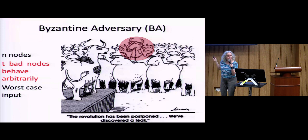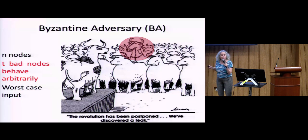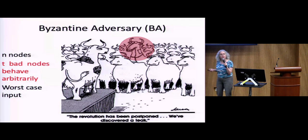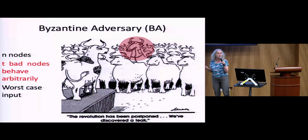We have N nodes, T of which are bad, and they behave arbitrarily — that's why it's called Byzantine agreement. They can do anything. We assume the adversary controls the input, meaning the adversary has set the initial bits to whatever they want. We're looking at worst-case behavior.